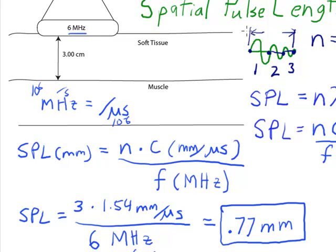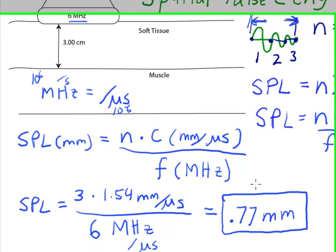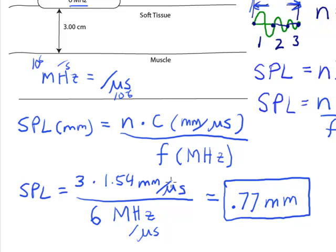So the length of the full pulse, called the spatial pulse length, in this case comes out to be 0.77 millimeters. Since it oscillates three times, you multiply by the speed of propagation and divide by the frequency in megahertz of the transducer.